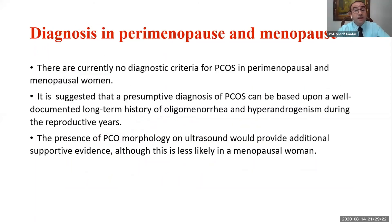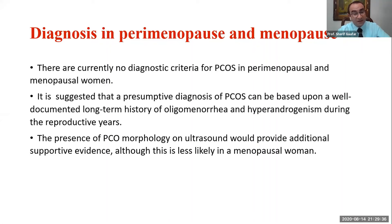In the perimenopause period, you usually depend on the history of long-term oligomenorrhea and hyperandrogenism for diagnosis. You will usually not find PCO morphology in perimenopause, but if it is present, it will confirm your diagnosis.